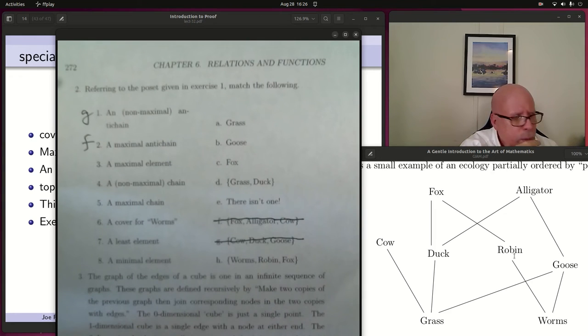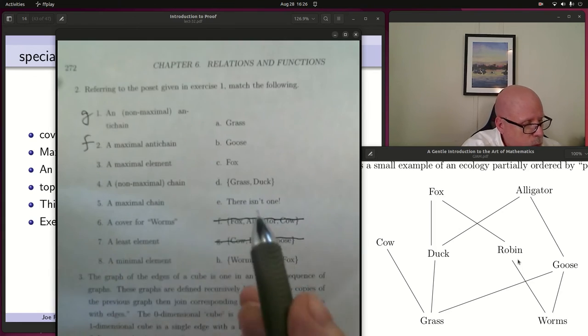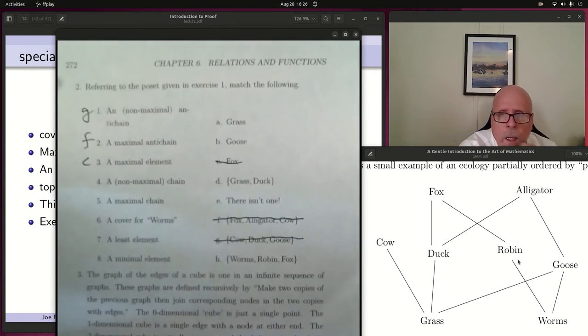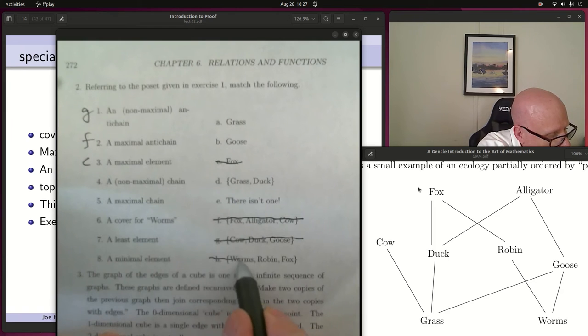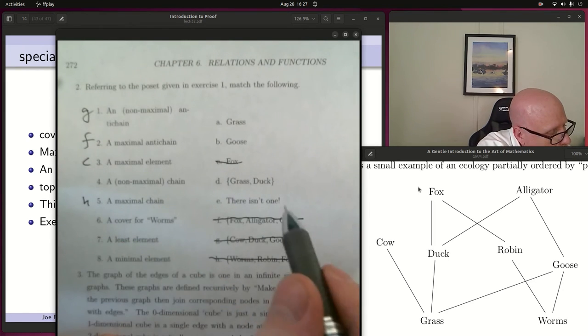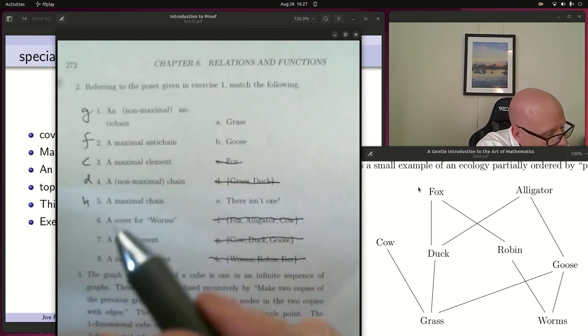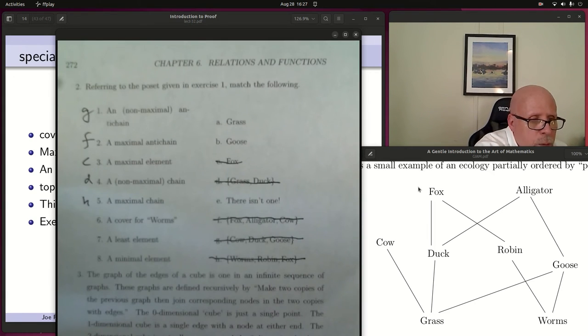Next we're asked to find a maximal element. A maximal element, what could be a maximal element? Something up top, up high. It's either the fox or the alligator. And if you look at the choices, there is no alligator. So it's the fox. A non-maximal chain. There's only two sets left. Worms, robin, fox. That's a maximal chain. And grass, duck. That's a non-maximal chain. Do you see the difference between those two? Grass and duck can be extended either up to fox or up to alligator. Whereas worms, robin, fox, it's already as long as it can get in the poset. A cover for worms. Something that lies above worms. It's either goose or robin, the way I read it. And robin's not one of the choices. So I guess it's goose.